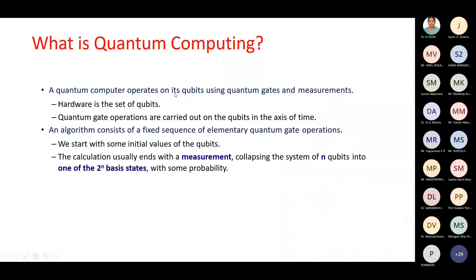This quantum computer operates on qubits, which are basically the hardware, and there is quantum gate operation similar to classical gate operation. We have quantum gates which are applied on the qubits over a period of time. Any quantum algorithm — similar to classical — has some bits, we apply gates and implement our algorithm. In quantum, we have quantum algorithms which have a fixed sequence of elementary quantum gate operations. We initialize the qubits, apply quantum gates, and implement our quantum algorithm.